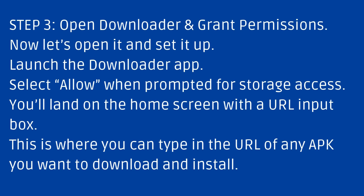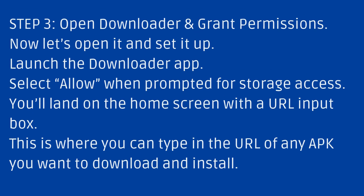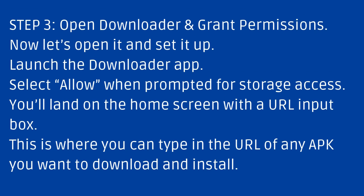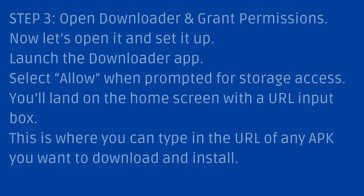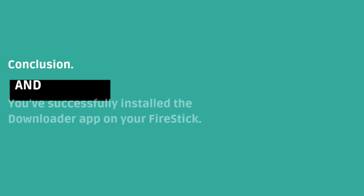Step 3: Open Downloader and grant permissions. Now let's open it and set it up. Launch the Downloader app and select Allow when prompted for storage access. You'll land on the home screen with a URL input box — this is where you can type in a URL of any APK you want to download and install.